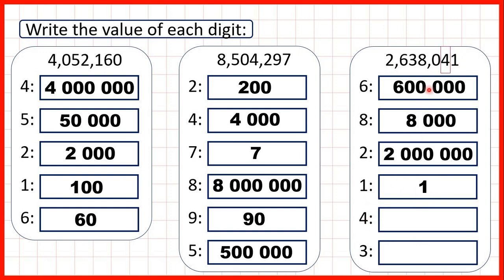The four is in our tens and four tens make forty. And the three is in our ten thousands so that's thirty thousand. Three with four zeros on the end because we can see that after the three we have four digits in our number.